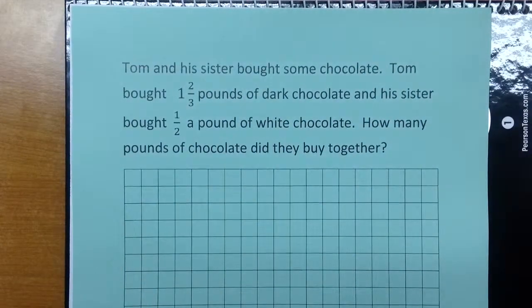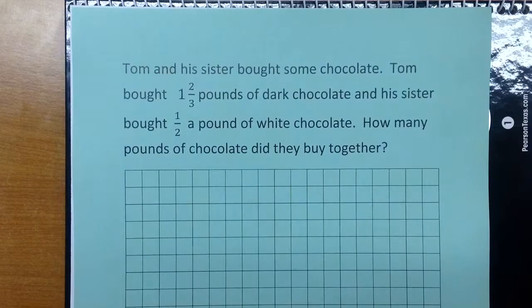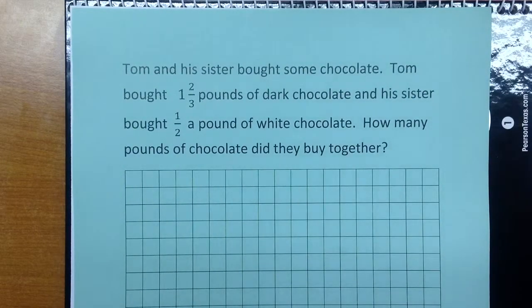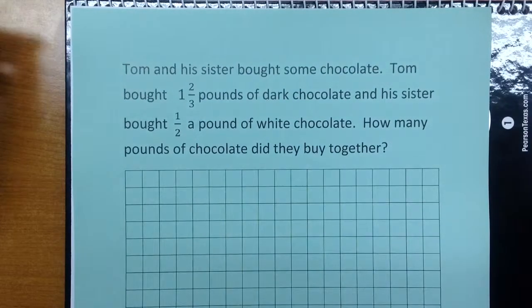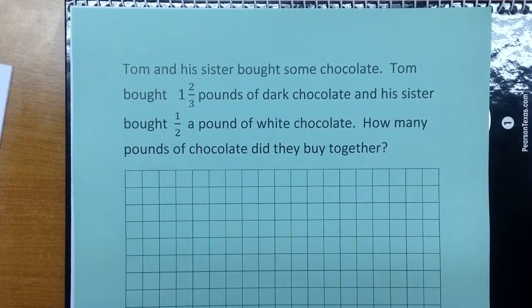I will be showing you how to add and subtract fractions with unlike denominators using ratio tables. Tom and his sister bought some chocolate. Tom bought one and two-thirds pounds of dark chocolate and his sister bought half a pound of white chocolate. How many pounds of chocolate did they buy together?